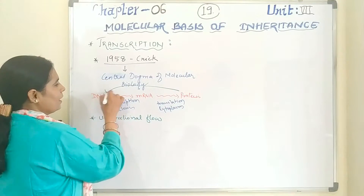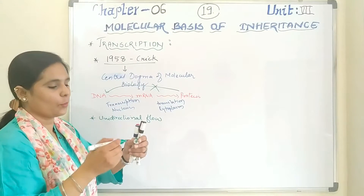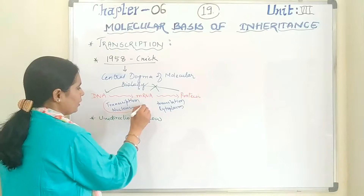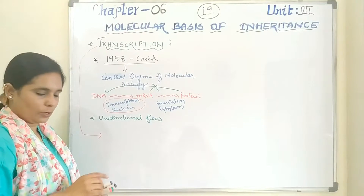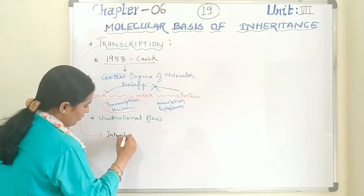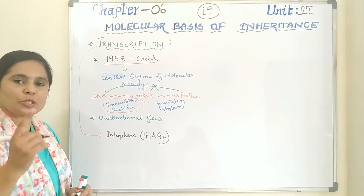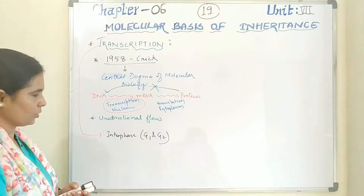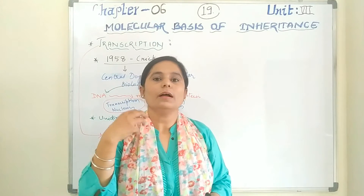Now we concentrate on the transcription process. Transcription is a process which occurs in the life cycle of a cell during interphase — specifically in G1 and G2 phases — where mRNA formation from genetic material takes place. In S-phase, replication of genetic material occurs.